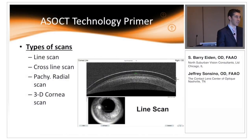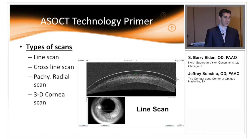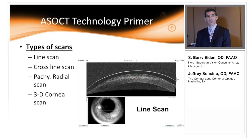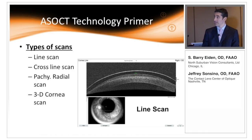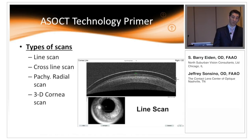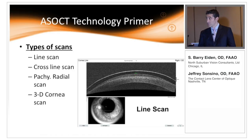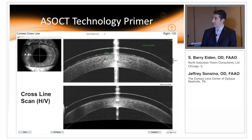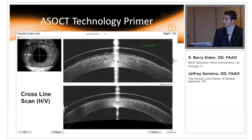Most of you already using OCT probably know that the mainstay scan type is a line scan — a very quick one-dimensional scan that gives you a real-time cross-sectional view of a vaulting lens on the cornea. We use line scans, and we also use cross line scans, which we're going to go over in the next couple of slides.